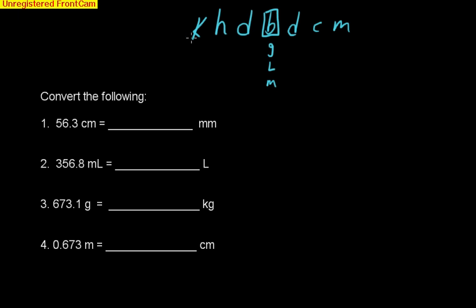So what does this mean? These are the prefixes. This is kilo, this is hecto, this is deca, this is deci, centi, and milli.